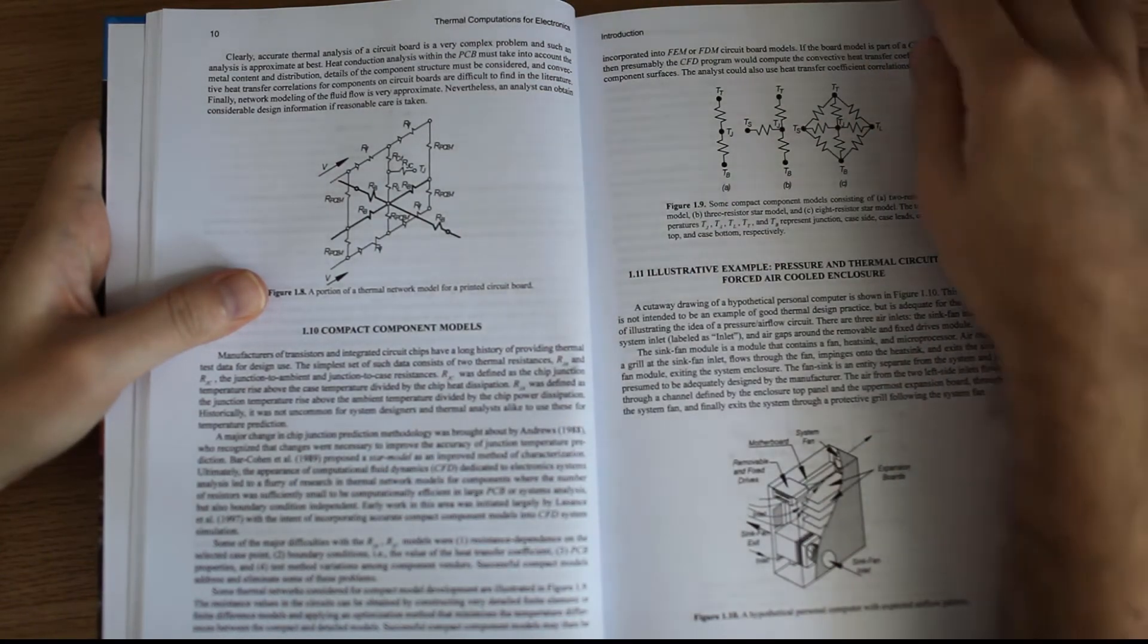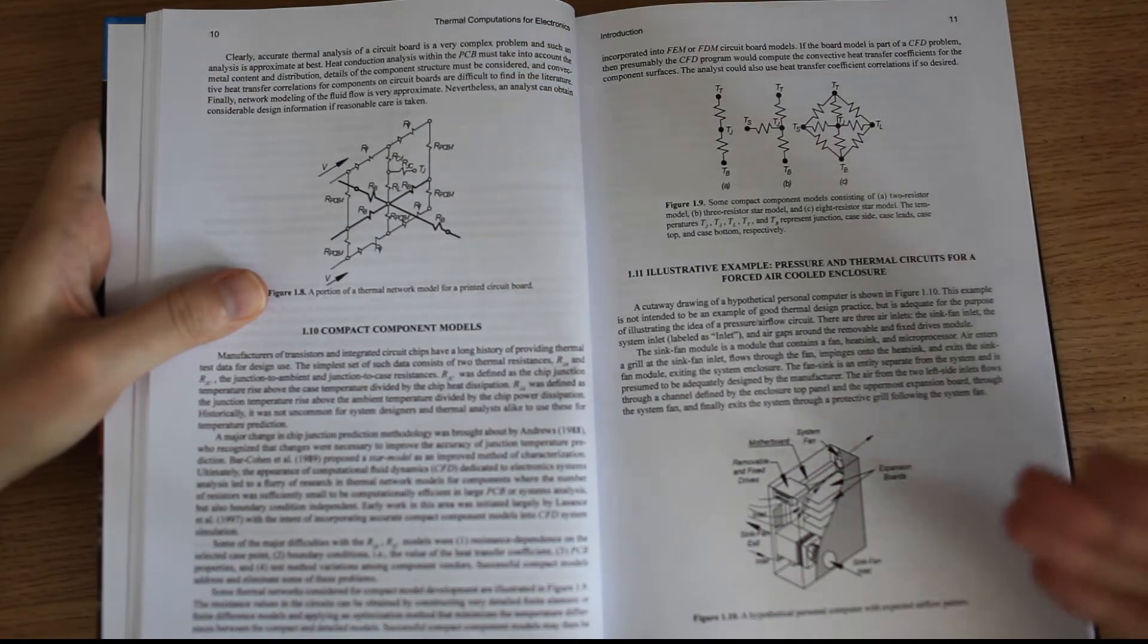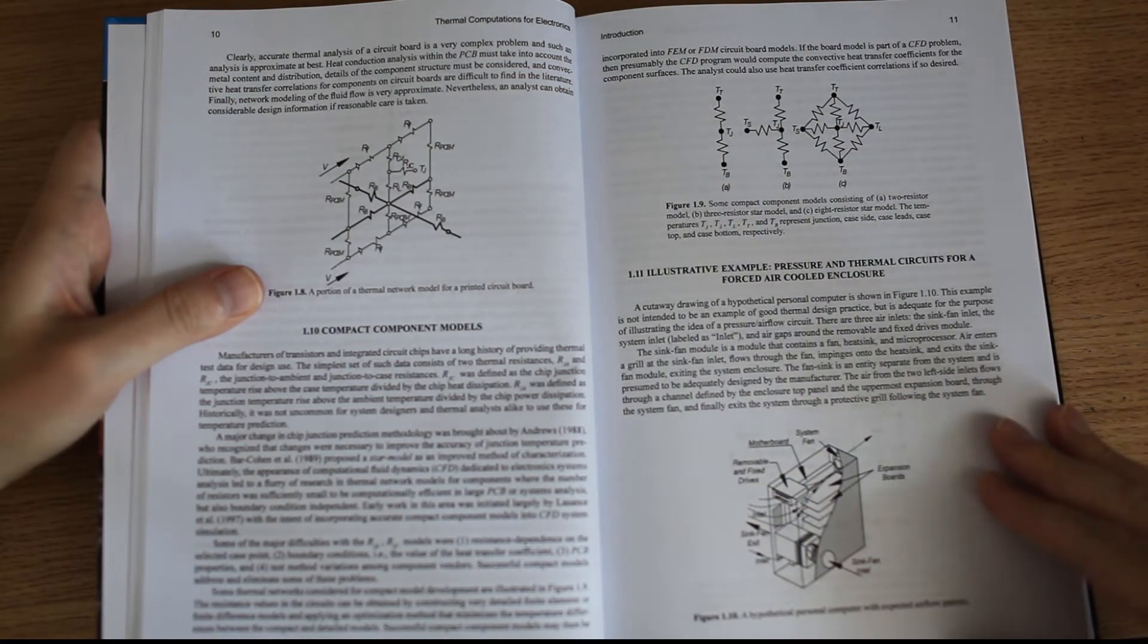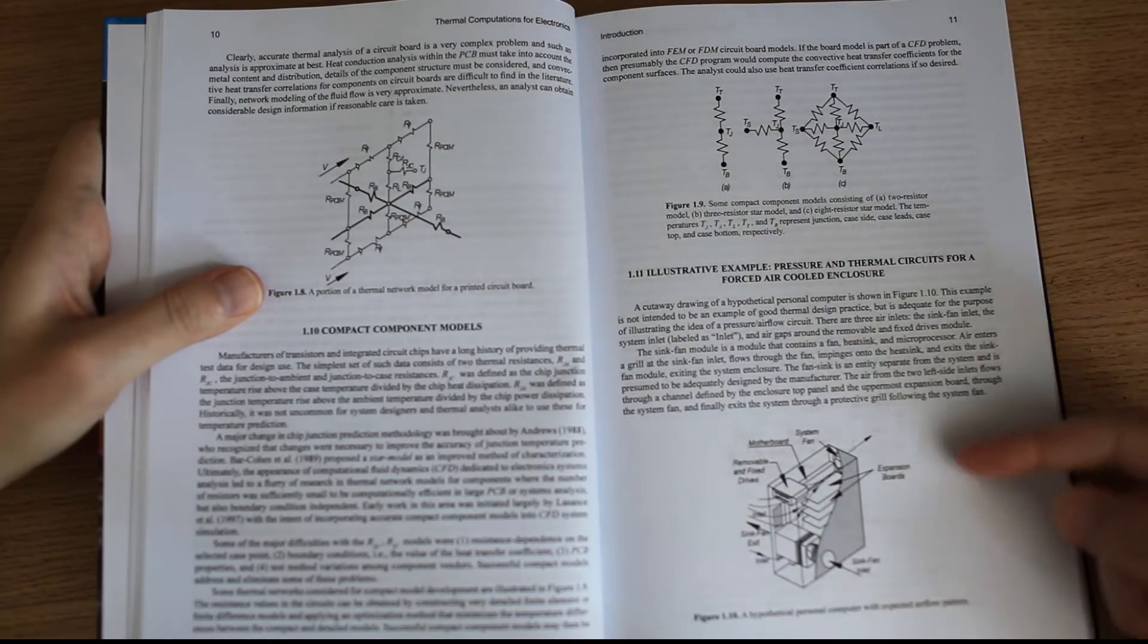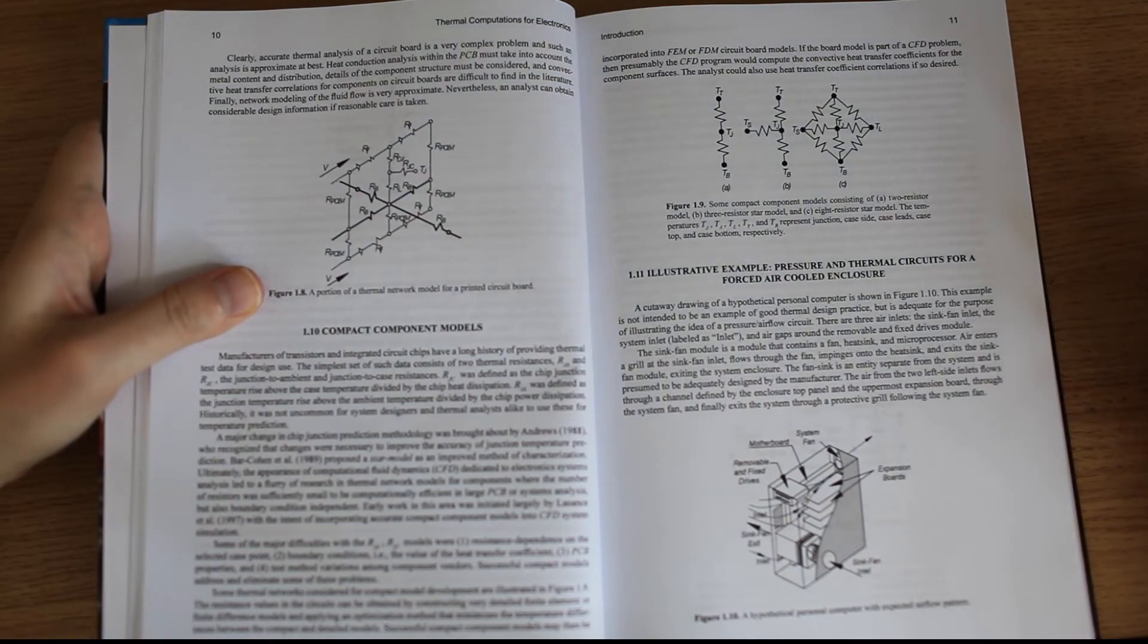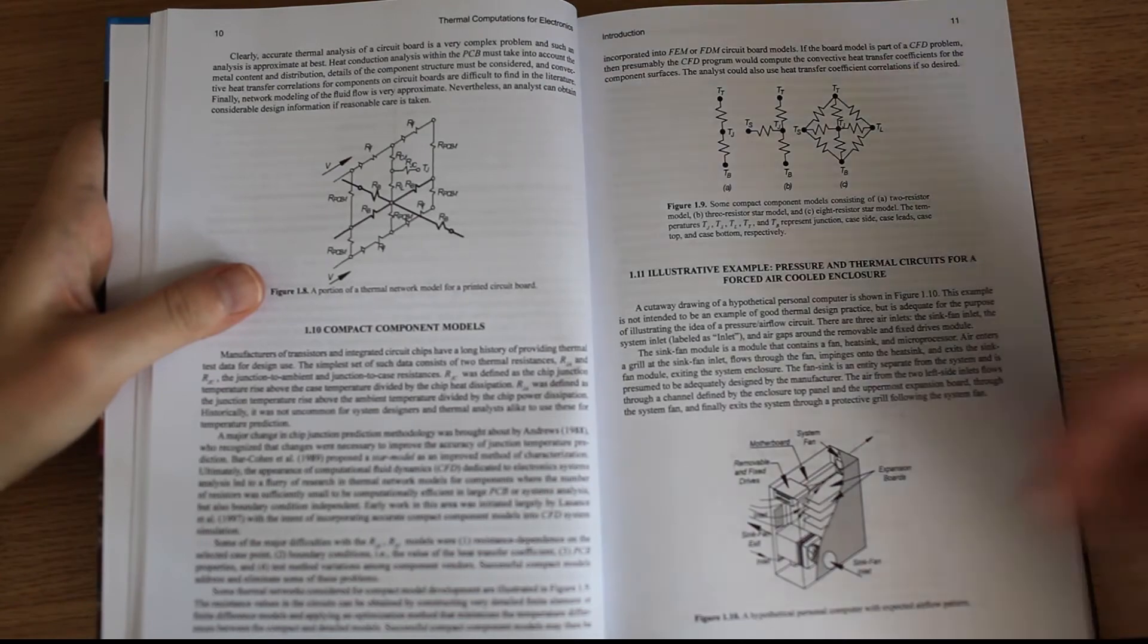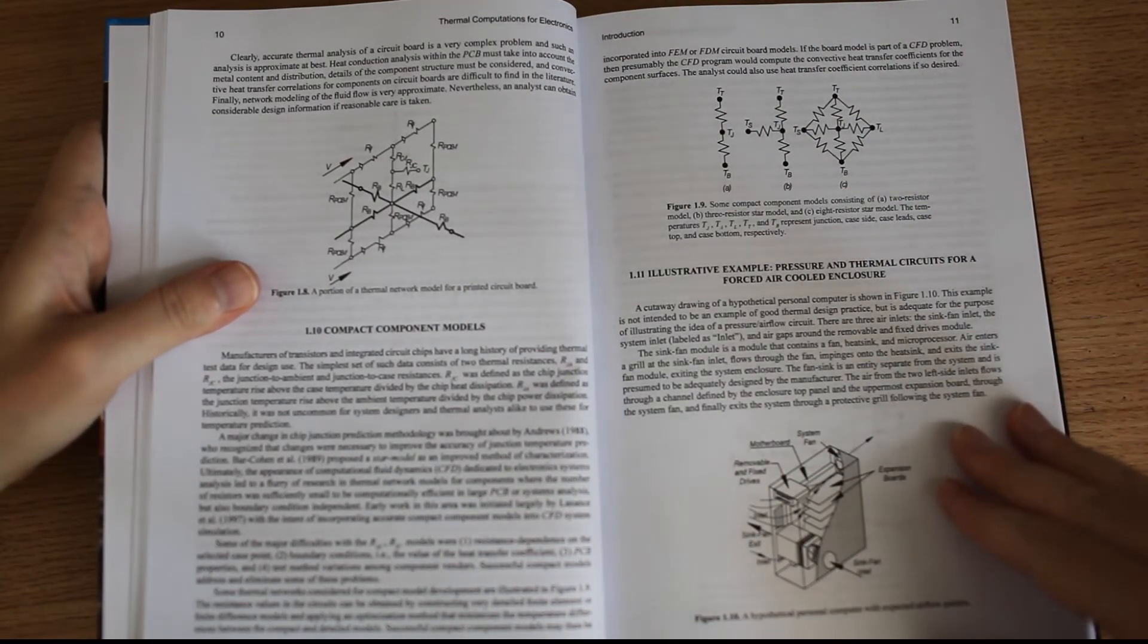It talks about compact component models, for example, how you would analyze the thermal circuit for forced air cooled enclosure like this one. It looks like a pretty complex model. If you had to do that with FEA, this would take a lot of hours to model every component inside the box, model the box. It's a very difficult work.